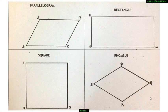Using a ruler, first draw the diagonals of each quadrilateral and mark the point of intersection as O.